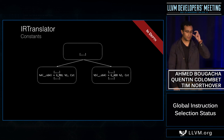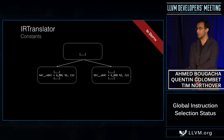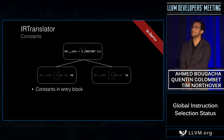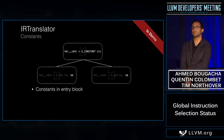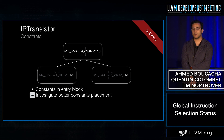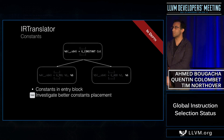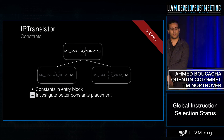Constants are another interesting aspect of the IR translator. If two different blocks use the same constant, right now we emit a G_CONSTANT in the entry block and use the defined vreg in each user. This does have drawbacks — for instance, using the fast register allocator we end up with huge live ranges and extra spilling. So we're investigating better placement of these constants.